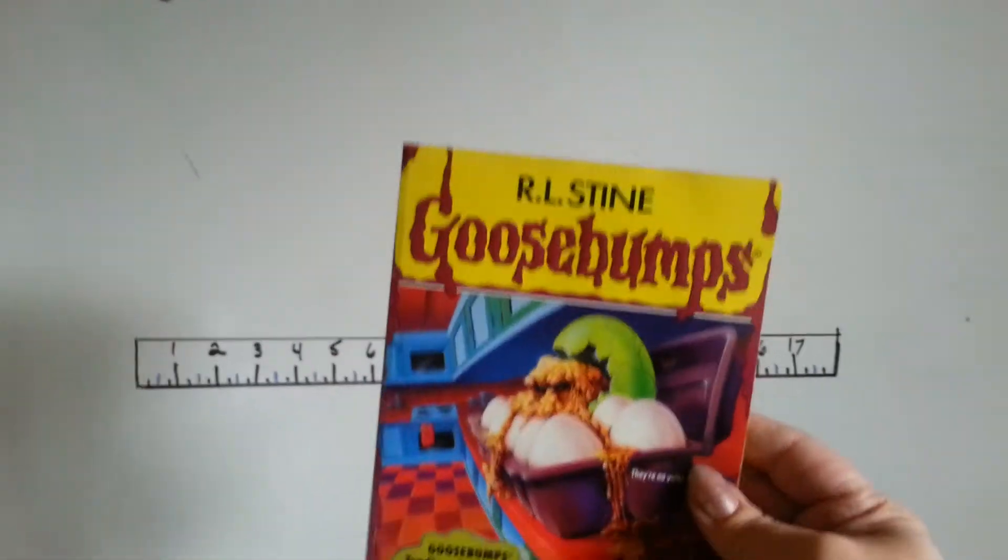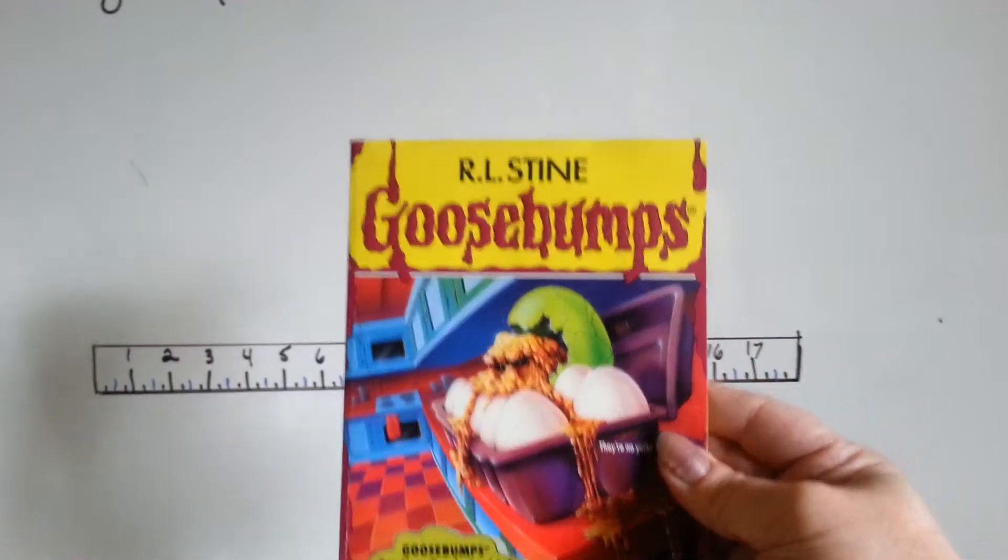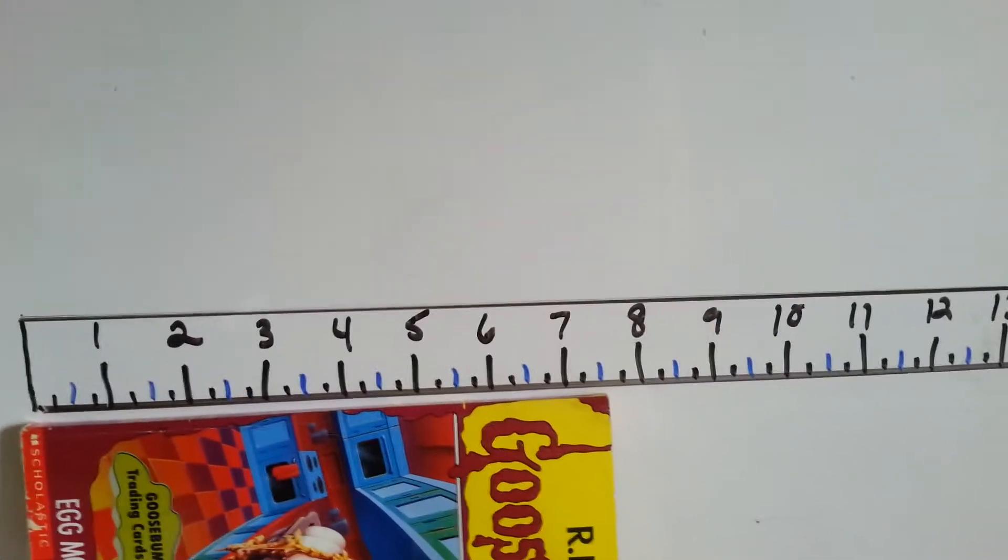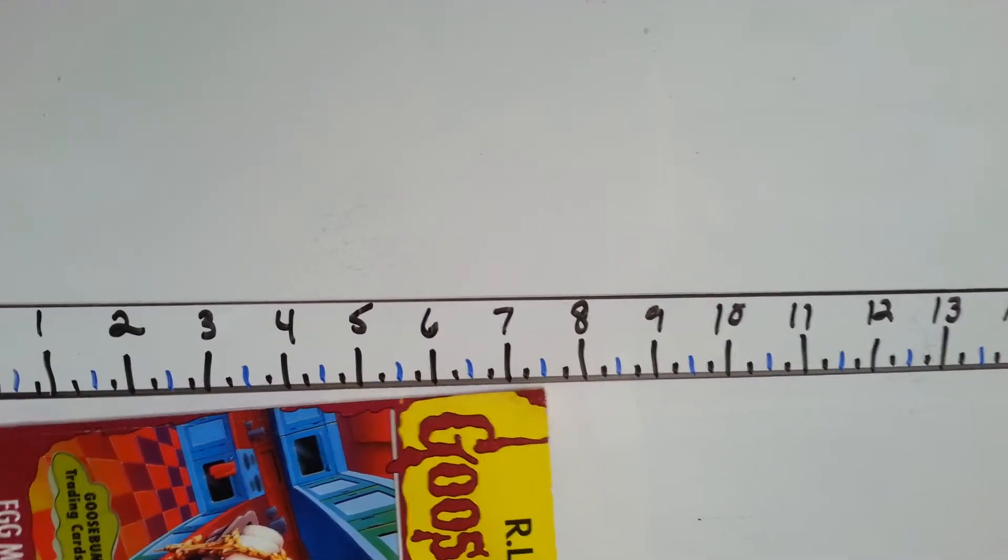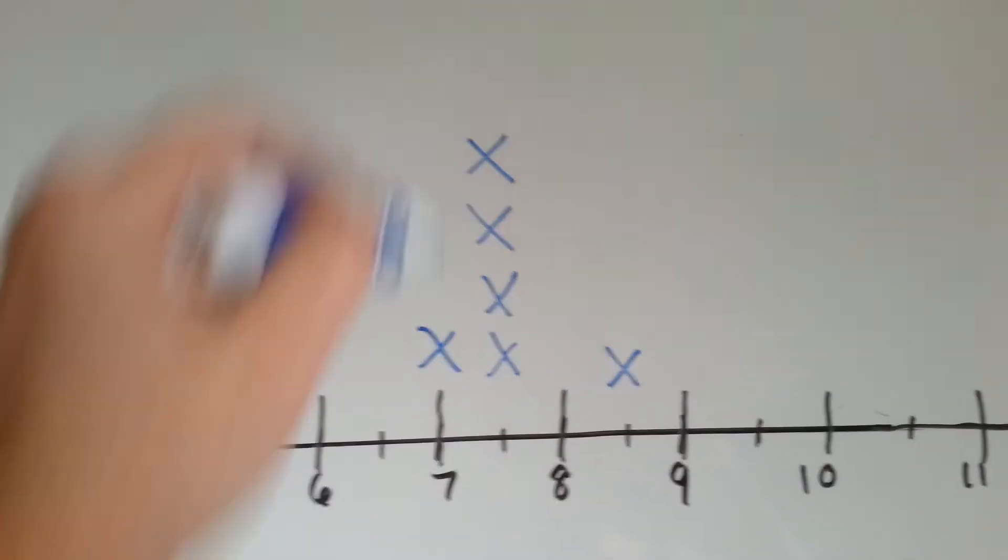Next book, Goosebumps by R.L. Stein. Egg Monsters from Mars. Let's measure this one. Look at that. It's at seven and a half. Looks like most of these paperbacks are seven and a half inches, huh? So, let's put another x for seven and a half.